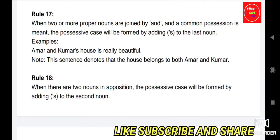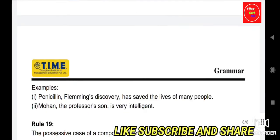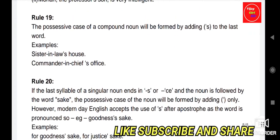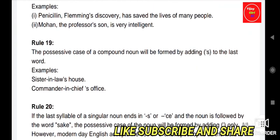Rule 18: When there are two nouns in apposition, the possessive case is formed by adding apostrophe S to the second noun. For example, 'Penicillin, Fleming's discovery, has saved the lives of many people.' 'Mohan, the professor's son, is very intelligent.'